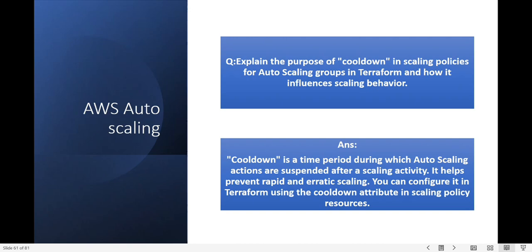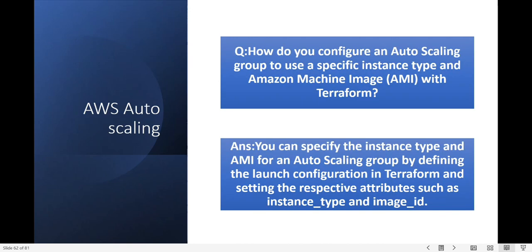How do you configure an Auto Scaling group to use a specific instance type and Amazon Machine Image with Terraform? You can specify the instance type and AMI for an Auto Scaling group by defining the launch configuration in Terraform and setting attributes such as instance_type and image_id.